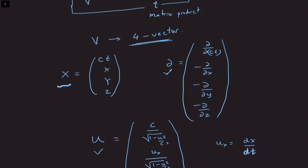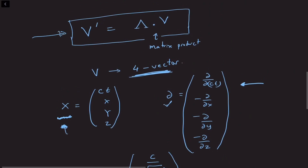It's not always true that you will be able to derive the transformation law from the transformation law for x. Some things just intrinsically transform like four-vectors but we don't have a way to derive from first principles that they transform like x. In that case you postulate that something is a four-vector and start with that assumption. So it's not easy to identify four-vectors, but once you have them, they transform via v-prime equals lambda dot v.